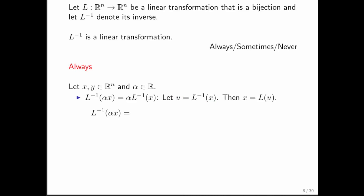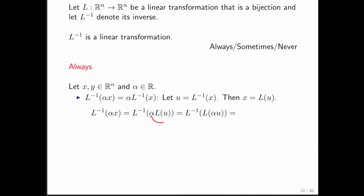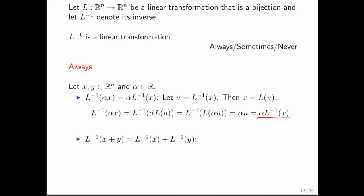Because L is the inverse of L inverse. Now we're ready to ask the question: what does alpha x transformed by L inverse equal? We can replace our x with L times u. And we know that then the alpha can be brought in because L is a linear transformation. And we know that L inverse of L of anything is just that anything. So we know that alpha times u comes back. But we also know that u we defined to be L inverse x. So that gives us that right there. And therefore, L inverse of alpha x is equal to alpha times L inverse of x, which is what we wanted.